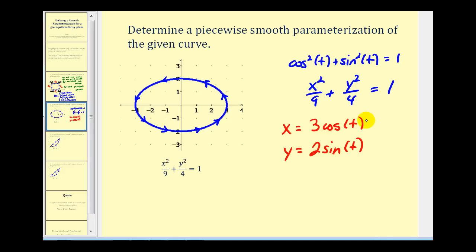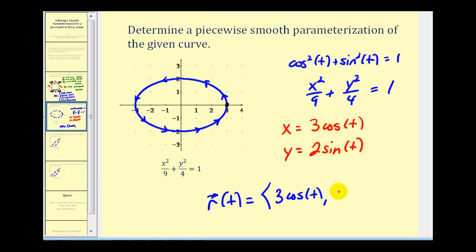Now we have both x and y expressed as functions of t. Tracing out this curve starting at one point and going around the ellipse, our vector-valued function has an x component of three cosine t and a y component of two sine t, where t is on the closed interval from zero to two pi, which takes us all the way around the ellipse.